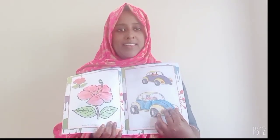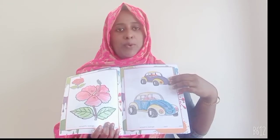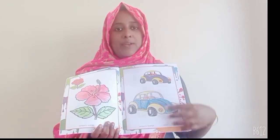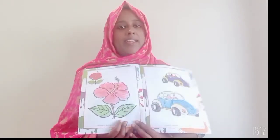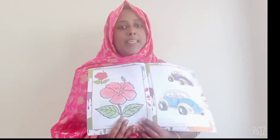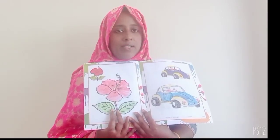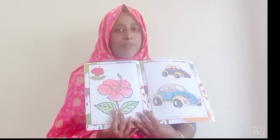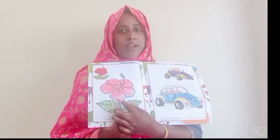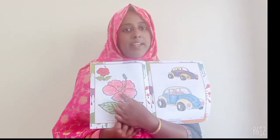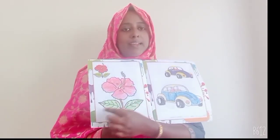What is this? You have to do a color here. Next. You have to do a color here. What is this? It's a flower, right? It's a shoe flower. The color is red. The leaf is green.